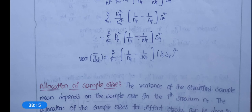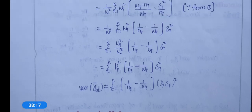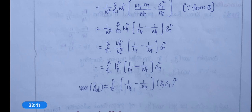Next is allocation of sample size. There are two methods: proportional allocation and Neyman's optimum allocation. These theorems will be explained in the next class.